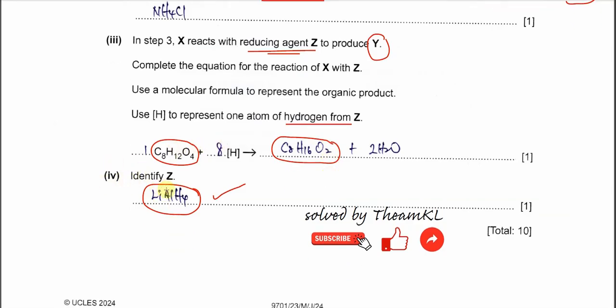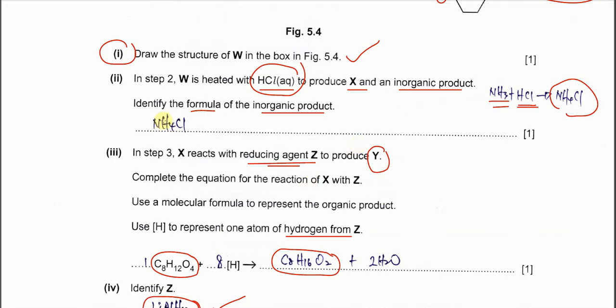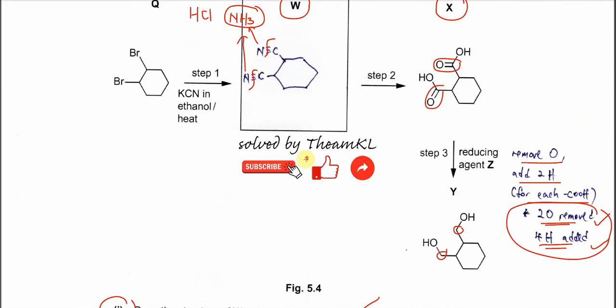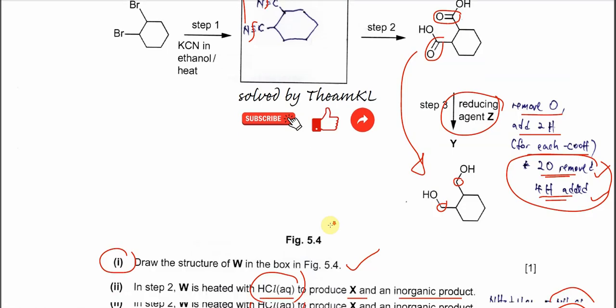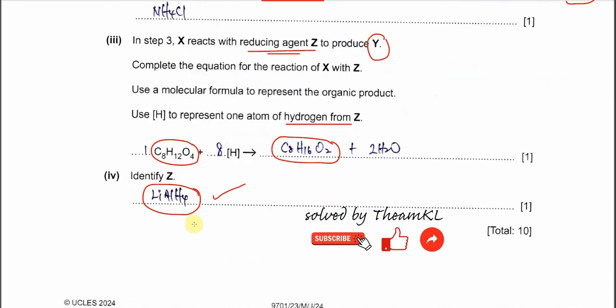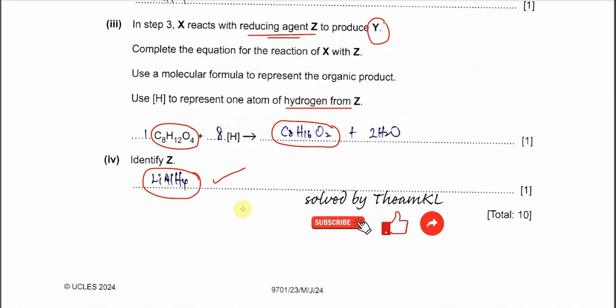Okay, the last part already told you the identity of Z. The Z is a reducing agent, right? The only reducing agent used to reduce carboxylic acid to form alcohol. Or it must be lithium aluminum hydride. Okay, that's all. Thank you.